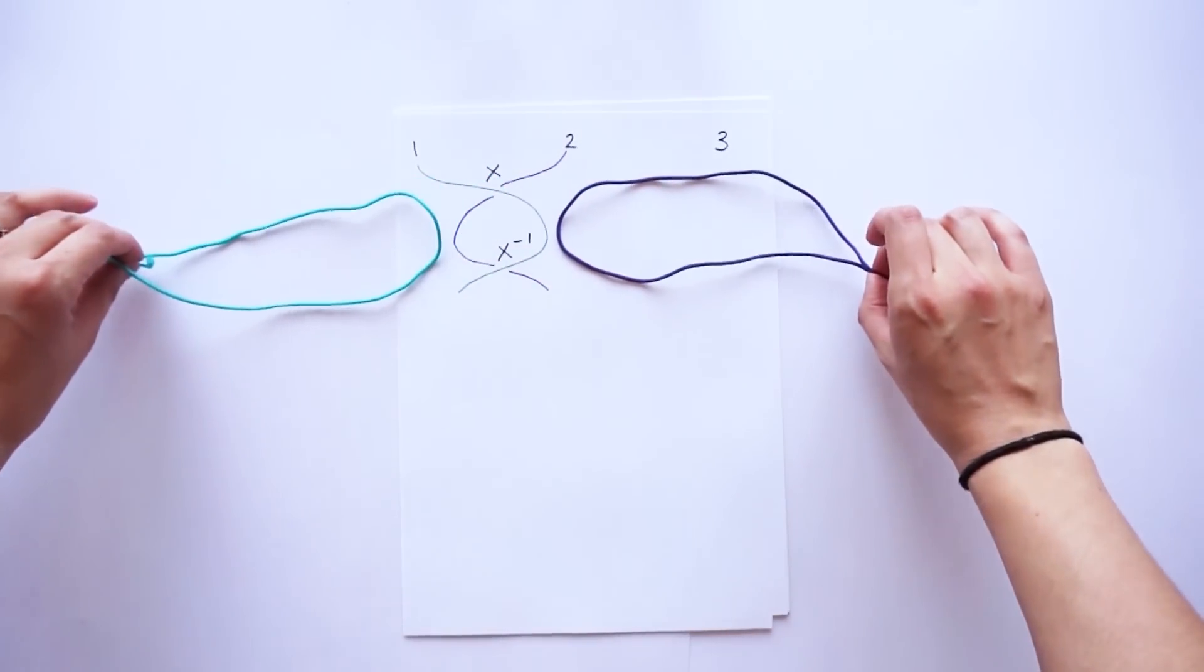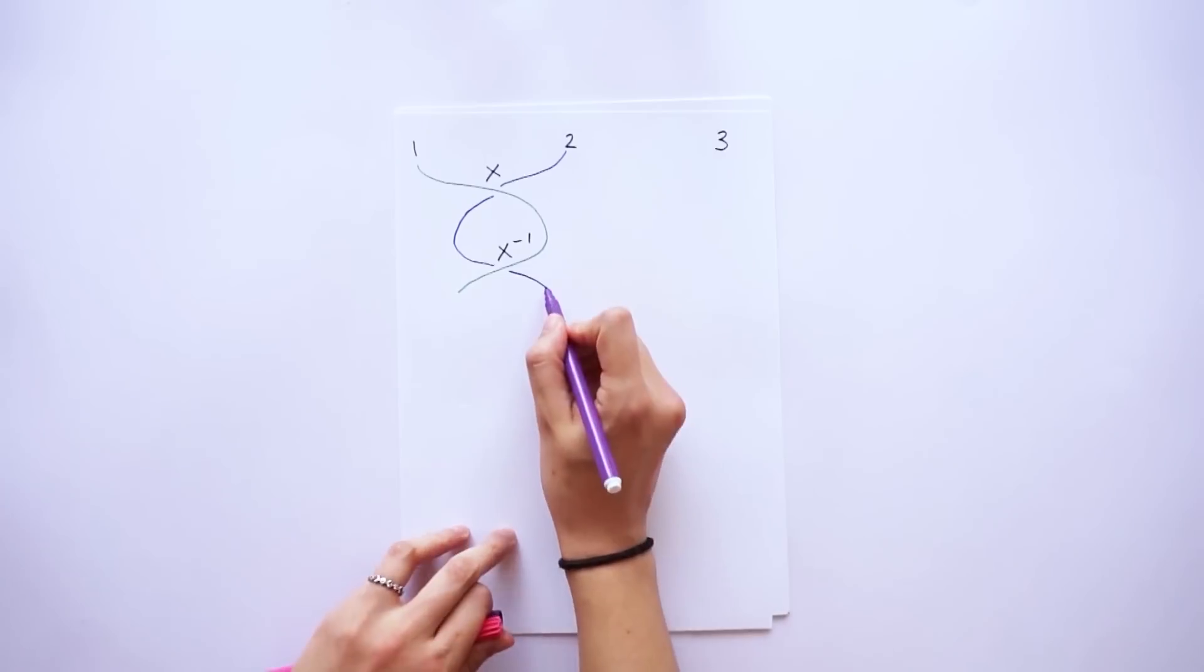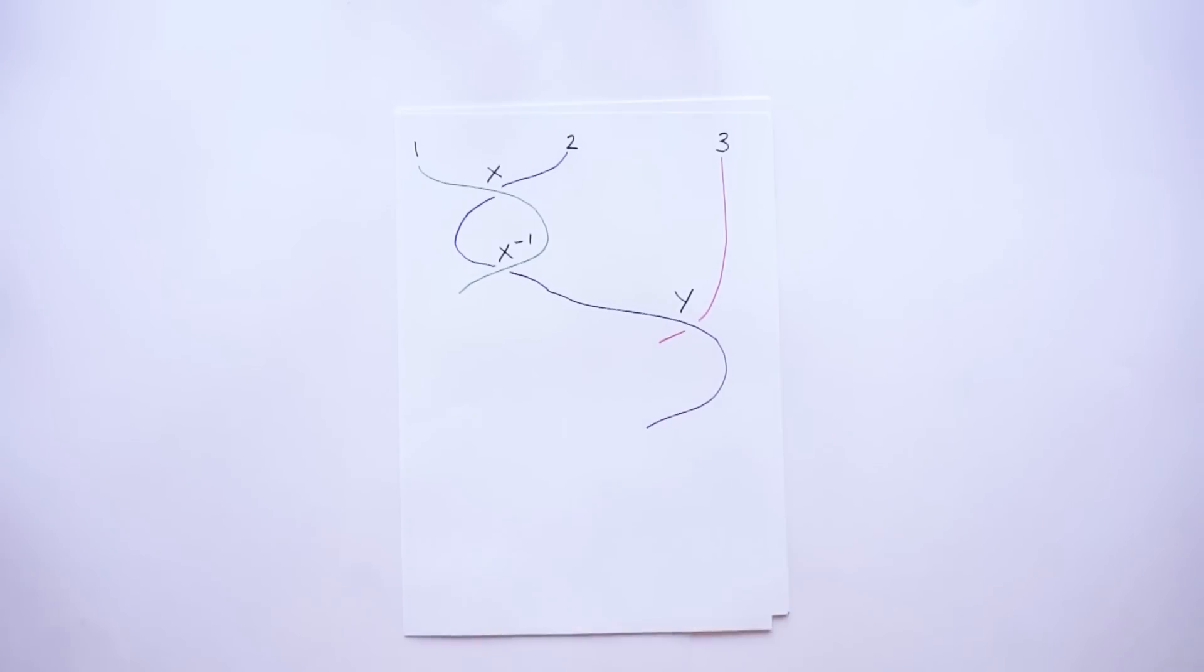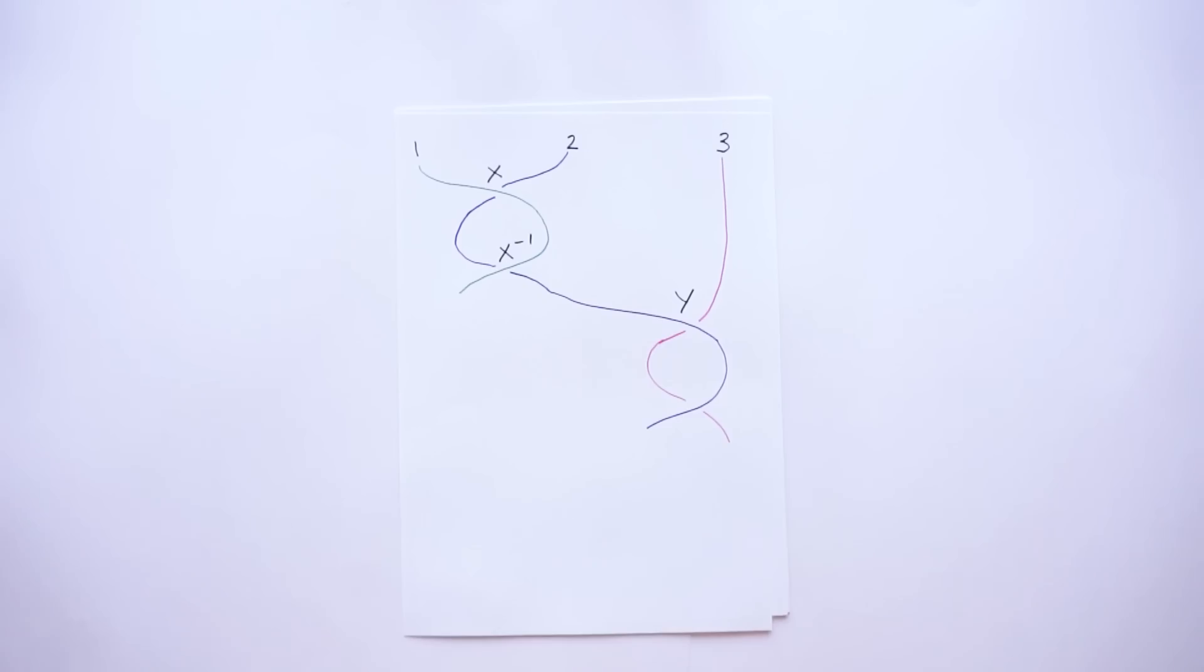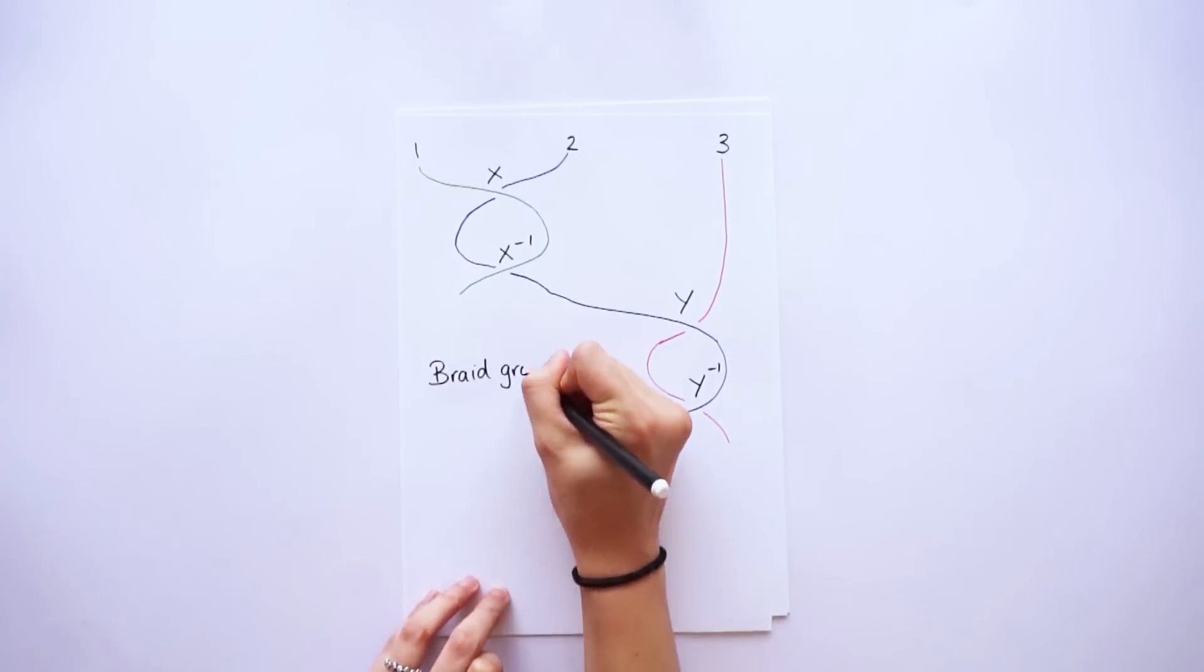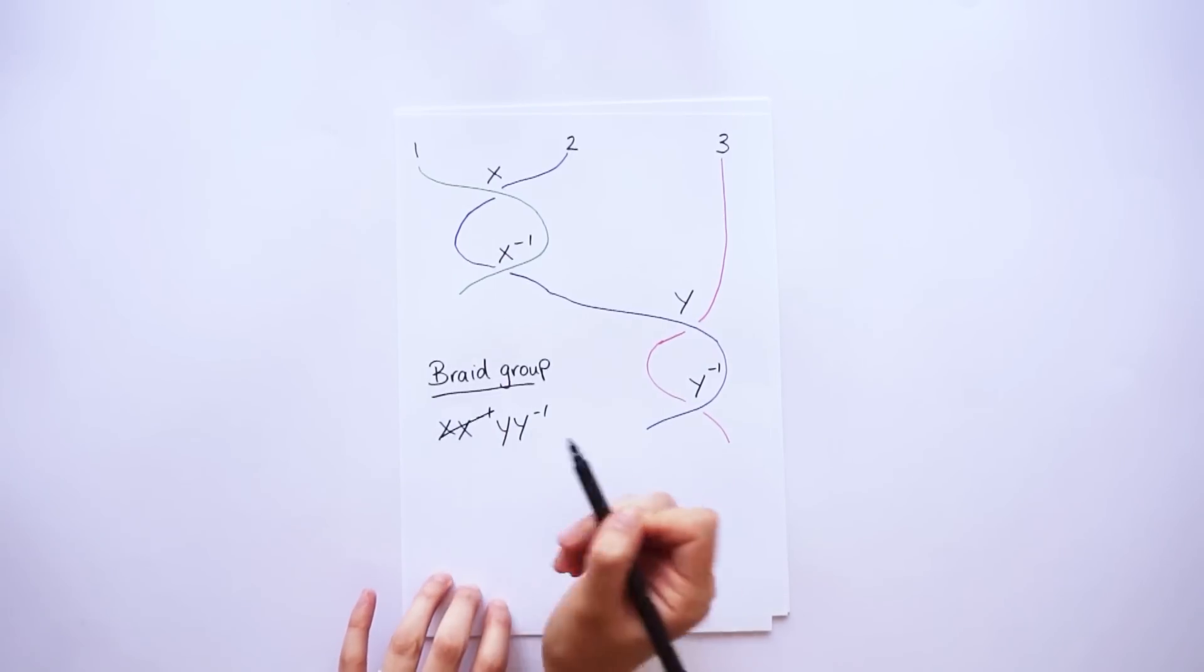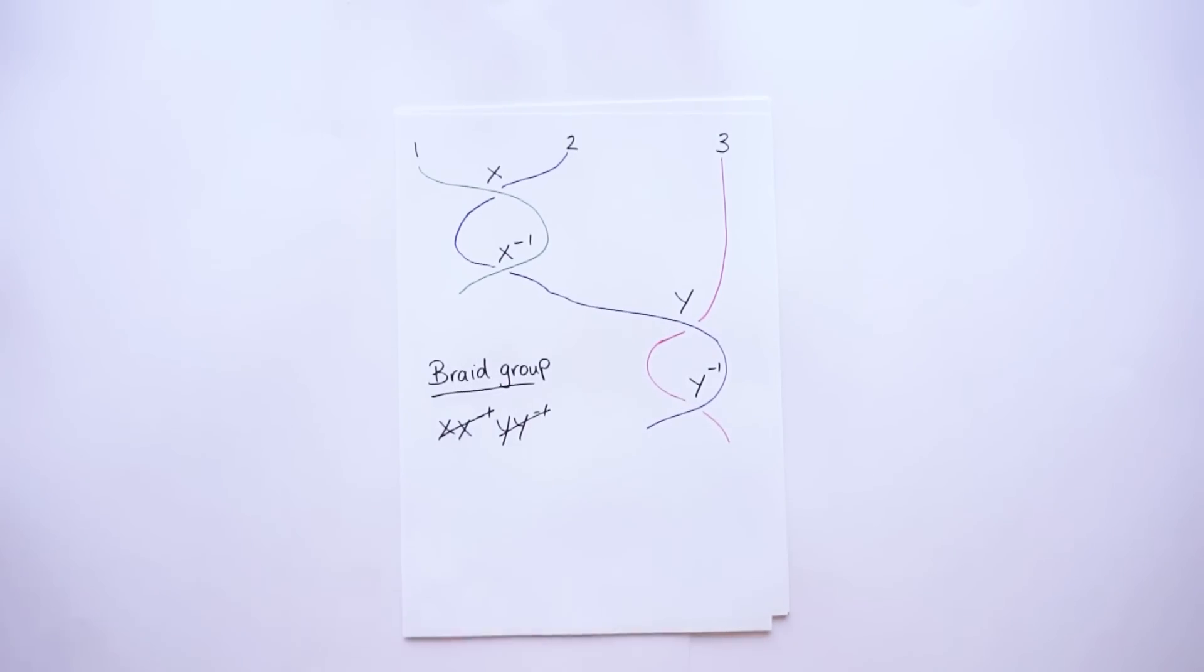When the strand in position 2 crosses over the strand in position 3, we'll call this y. And when the strand in position 2 crosses under the strand in position 3, we'll call this inverse y. This notation is called a braid group. And actually, everything we need to know about our problem is encoded in these letters. The way these letters work is that the x and inverse x cancel, and the y and inverse y cancel. But they only cancel out if they're next to each other.